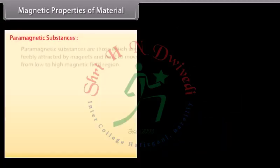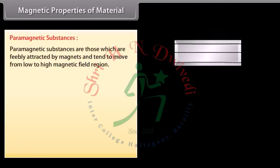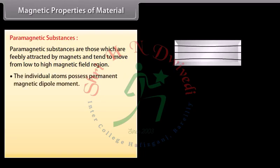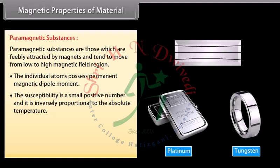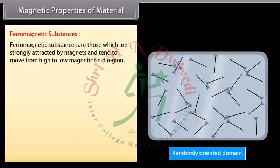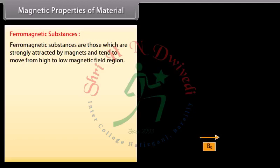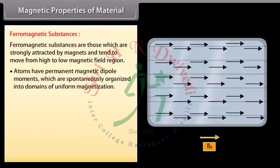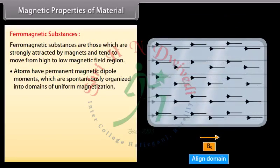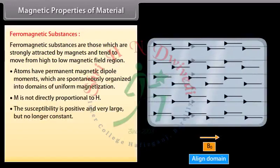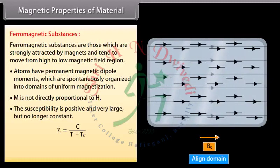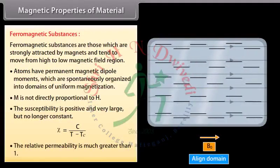Paramagnetic substances are feebly attracted by magnets and tend to move from low to high magnetic field regions. Individual atoms possess permanent magnetic dipole moments. Susceptibility is a small positive number, inversely proportional to absolute temperature: χ = C/T. Relative permeability is slightly greater than 1. Ferromagnetic substances are strongly attracted by magnets. Atoms have permanent magnetic dipole moments spontaneously organized into domains. M is not directly proportional to H. Susceptibility is positive and very large: χ = C/(T − T_c). Relative permeability is much greater than 1.